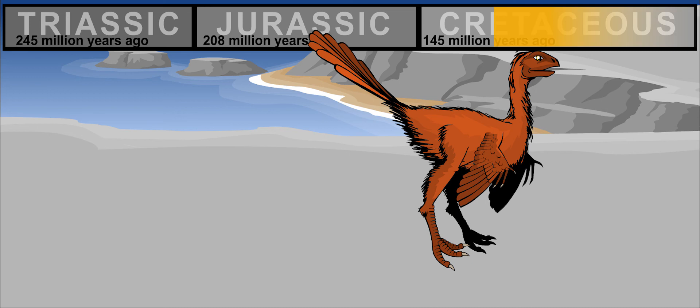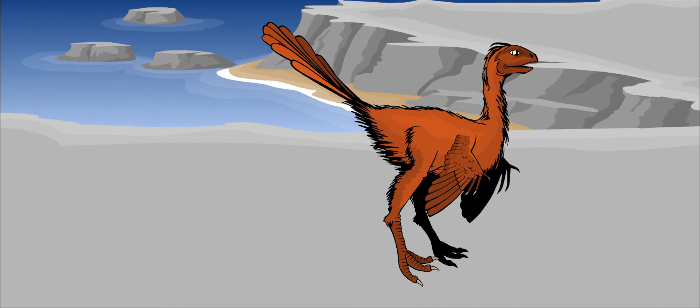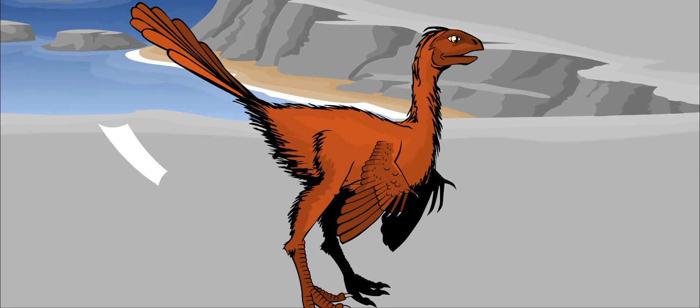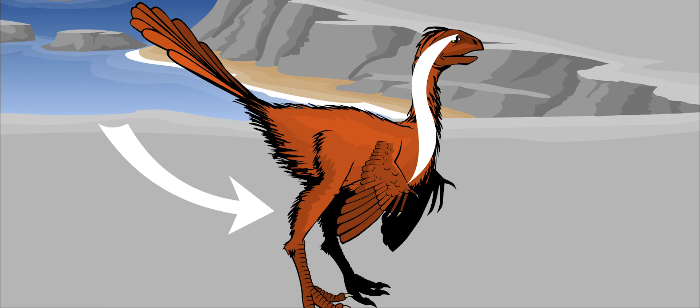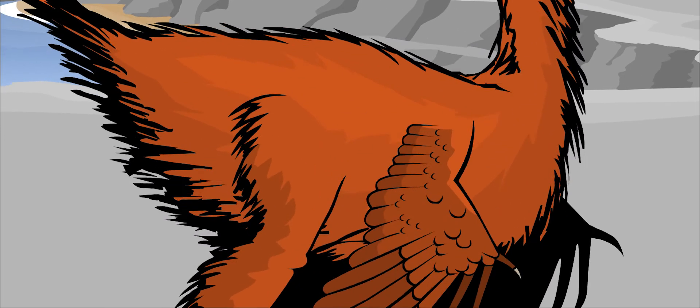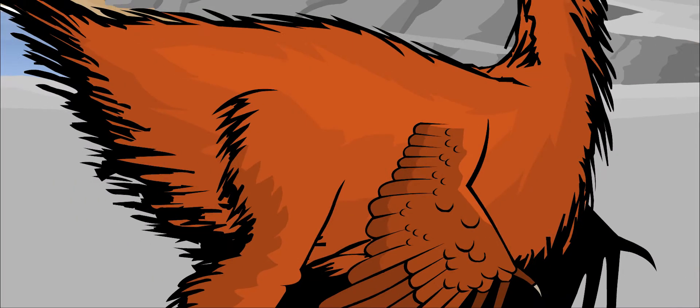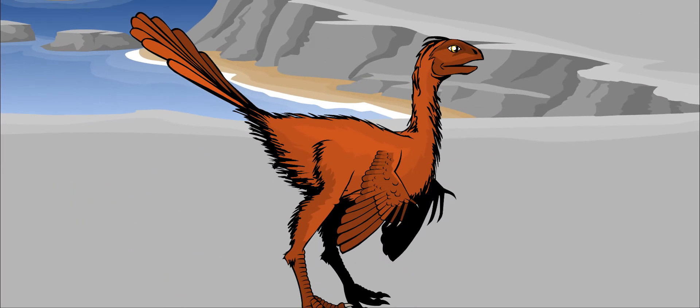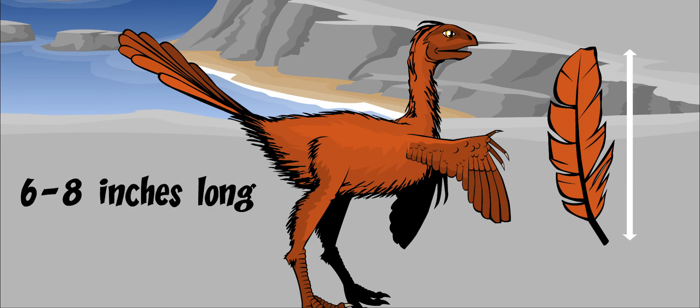Caudipteryx lived about 120 to 136 million years ago. It was a graceful creature with long legs and a long S-shaped neck. Its entire body was covered with small feathers called down. They must have felt like fur. Its wings had feathers that were between six and eight inches long. They had shafts and veins like feathers on today's birds.